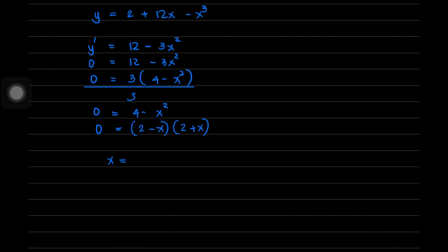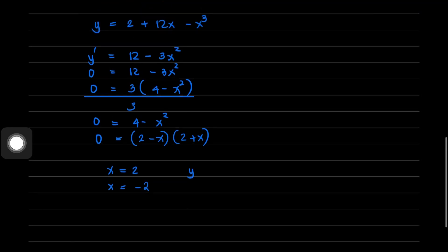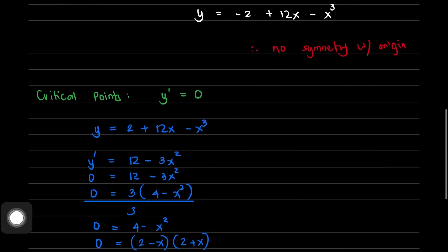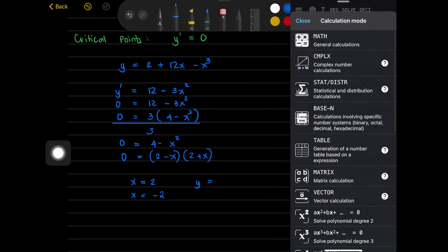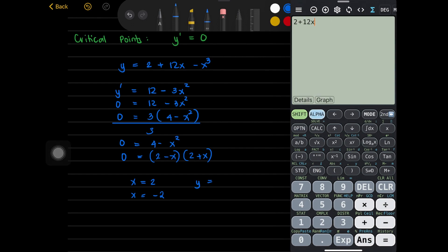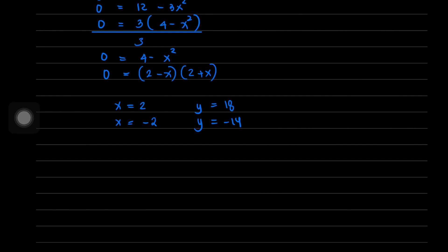Therefore, the values of x are 2 and negative 2. Now we locate the y-coordinates by substituting into the original equation. Using a calculator, if x equals 2, y equals 18. If x equals negative 2, y equals negative 14. So the critical points are (2, 18) and (negative 2, negative 14).